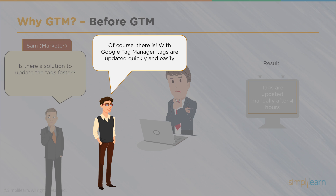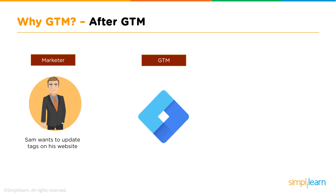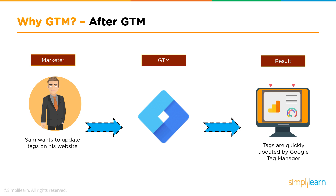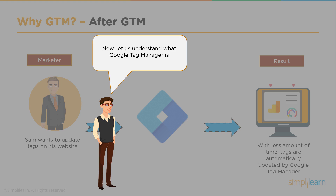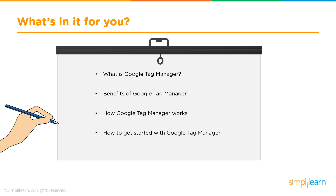That's where GTM comes in, because there is a solution — update your tags faster — and that's Google Tag Manager. GTM is a place for you to add tags quickly and easily. Tags are just snippets of code that allow you to track things on your website interactively. With GTM, you can bypass the webmaster and do it quickly and easily. You can track all the interactivity on your website and bypass your web developer.